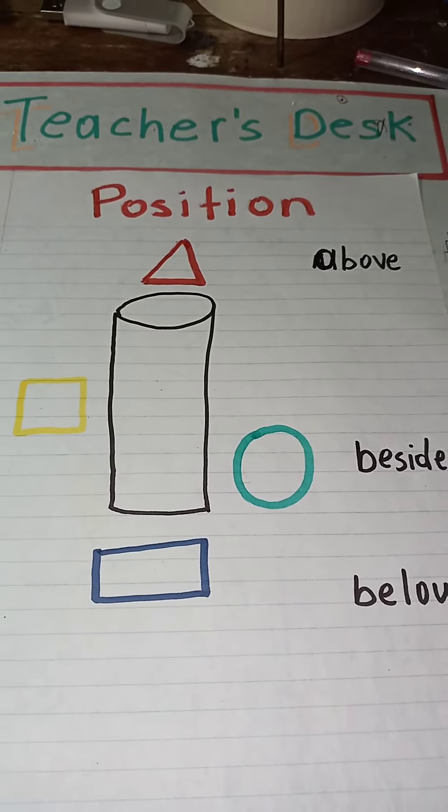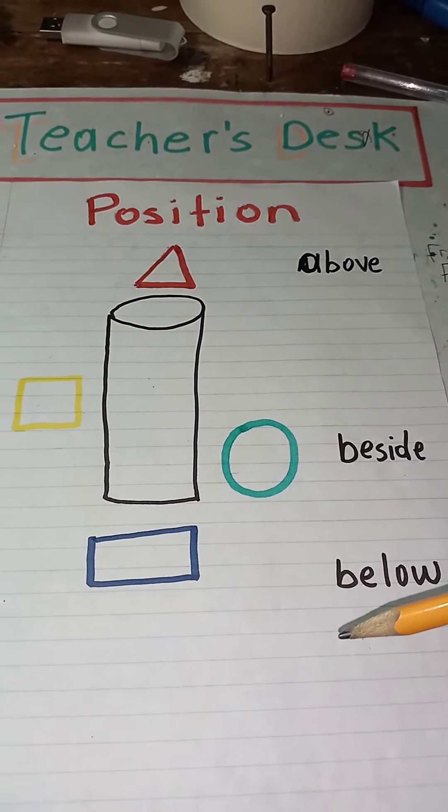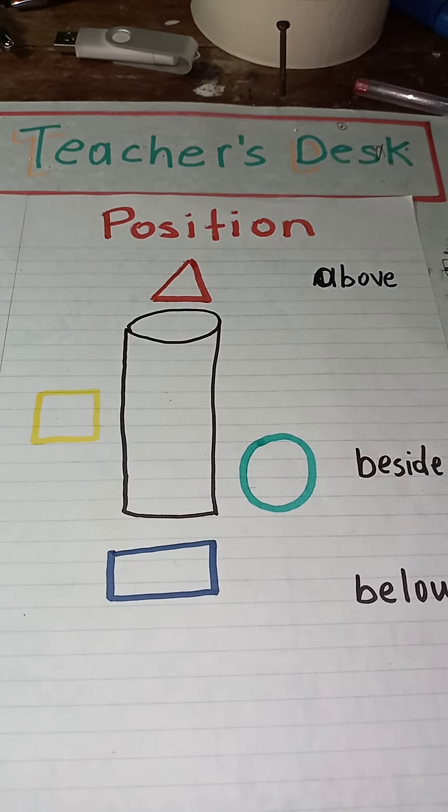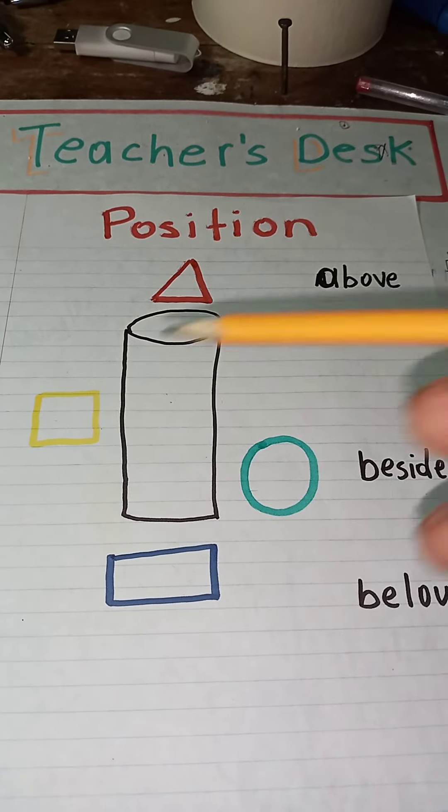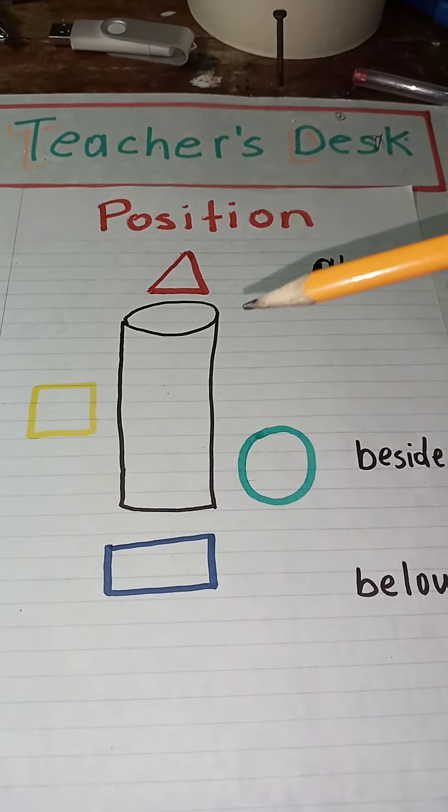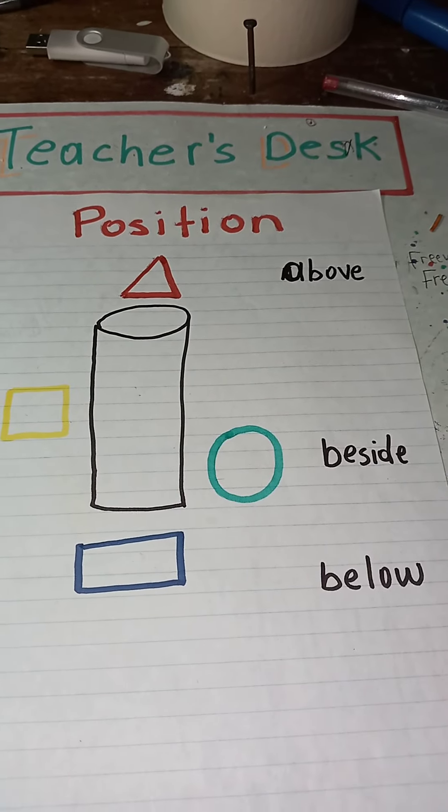It's a very easy exercise. You could pause the video right now and draw this on a piece of paper and test the child. Or you could use a physical example by going to the kitchen or living room and test the child to see if they know what is above, what is beside, what is below. It's very important.